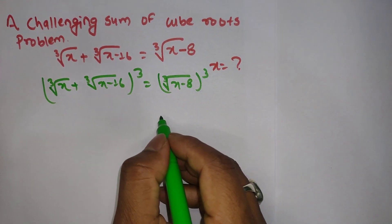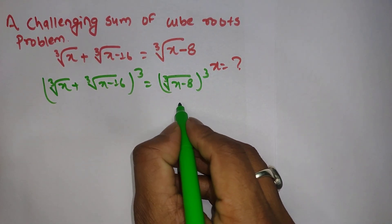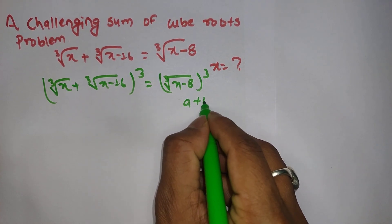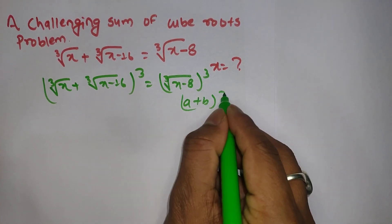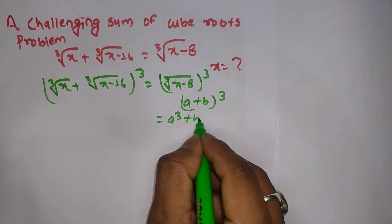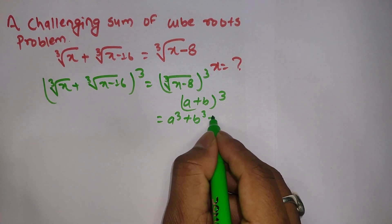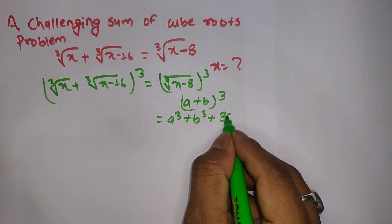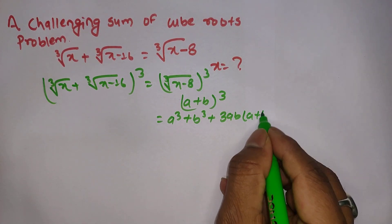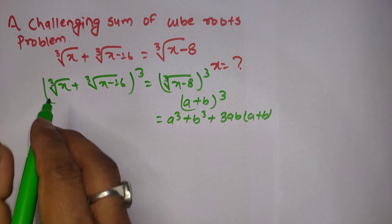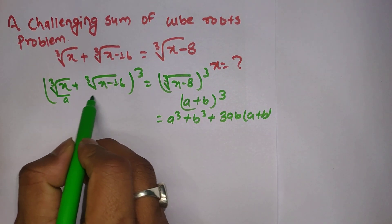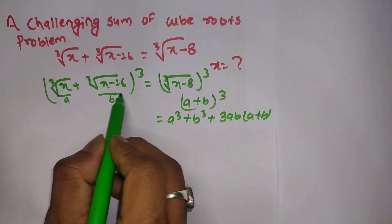We must be aware of the formula: a plus b whole power 3, which expands as a³ plus b³ plus 3ab times (a plus b). We are going to apply this formula here, where this is our a and this is our b.